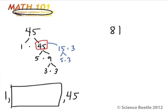So now when we write the factors, we would write 1, 3, 5, 9, 15, and 45. Okay?